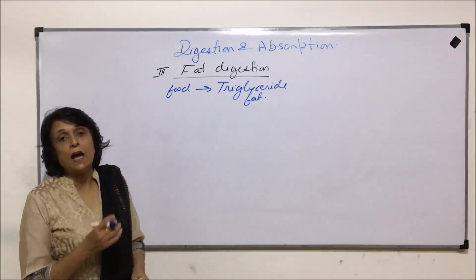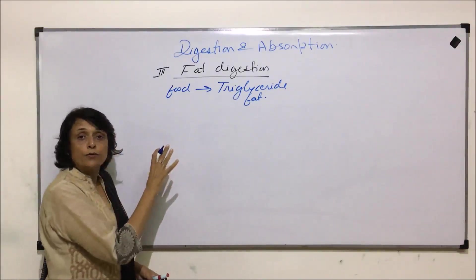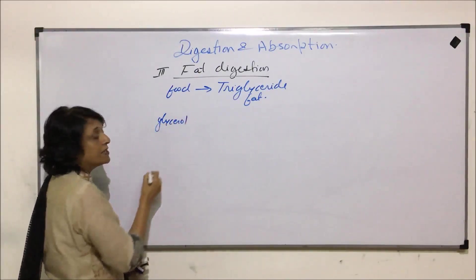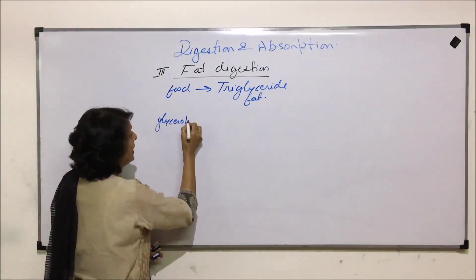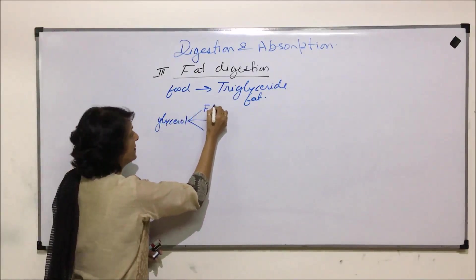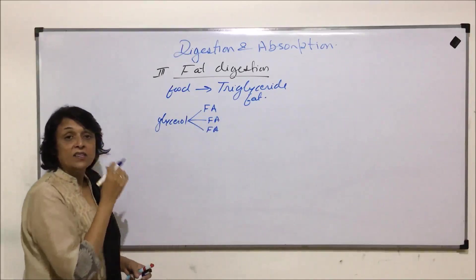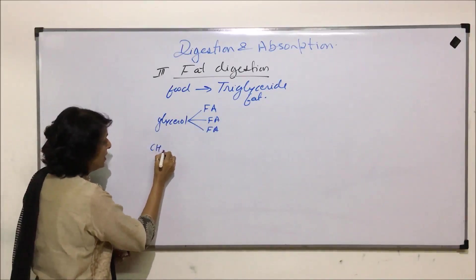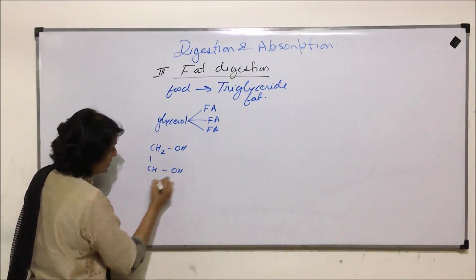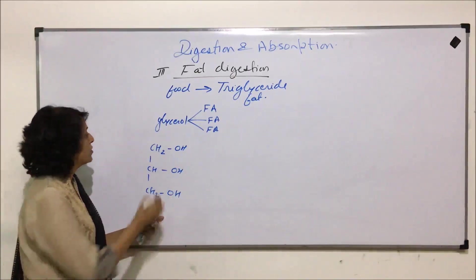We need to understand how triglyceride is broken down into simpler molecules. When we talk of normal fat, there is glycerol which is attached with one, two, or three fatty acids. The structure is CH2OH-CHOH-CH2OH. This is the glycerol molecule.